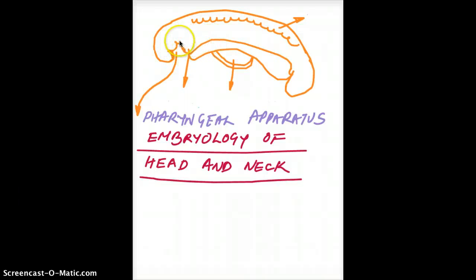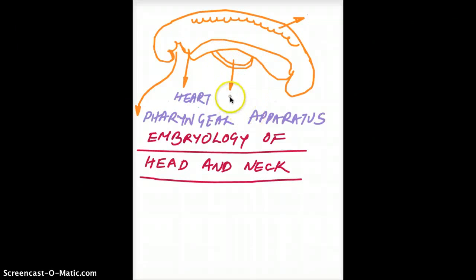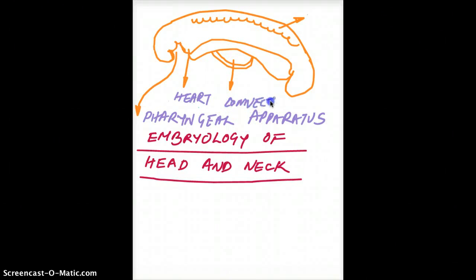But what is this? This bulging structure right here is going to develop into the heart. This is the connection to the yolk sac. So connection to yolk sac. These are the different somites. And down here,